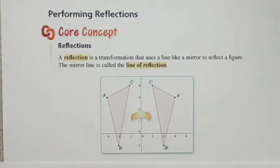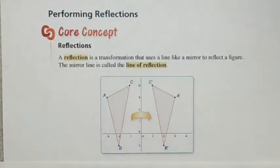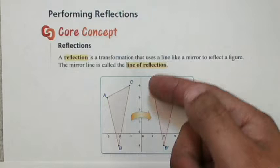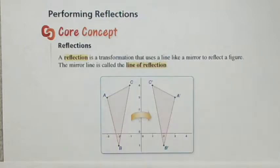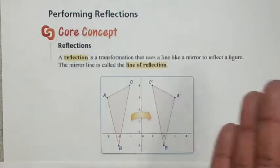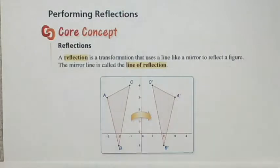Key concept: a reflection is a transformation that uses a line like a mirror to reflect a figure. The mirror part is called a line of reflection. In this particular example, the line of reflection is going to be the y-axis — that's where the mirror would go — and you would see the reflection of triangle ABC.